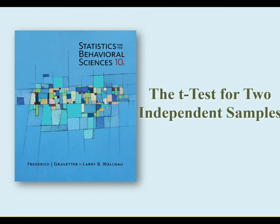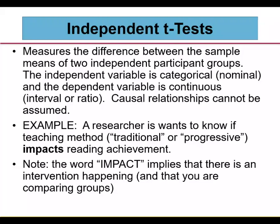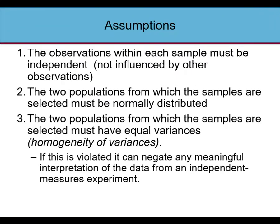More commonly we test two different groups to see if there's a difference between them. The independent t-test measures differences between sample means of two independent participant groups. The independent variable is categorical/nominal and the dependent variable is continuous — interval or ratio. Causal relationships cannot be assumed unless you're doing an experiment. Note: the word 'impact' implies an intervention and comparing groups, so if you use 'impact' and then run a correlation, that's the wrong analysis.